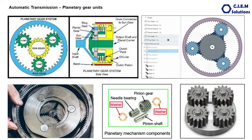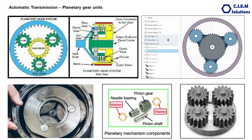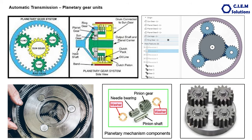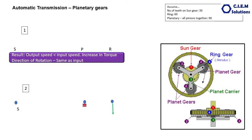Now we will look in detail at how we obtain seven variable speeds. This is a planetary gear set. Let us assume the number of teeth on the sun gear is 30, the number of teeth on the ring gear is 60, and all three planetary pinions together have a total of 90 teeth.